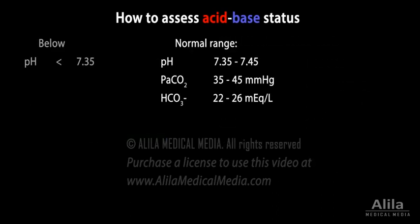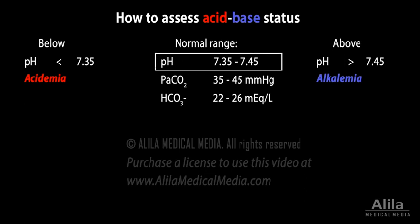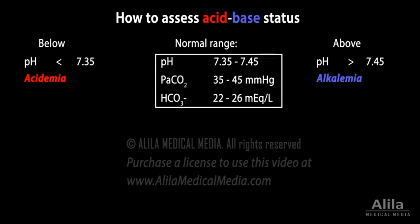A pH below or above the normal range indicates acidemia or alkalemia, respectively. However, a pH in the normal range does not automatically rule out acid-base imbalance unless PaCO2 and bicarbonate levels are both normal.